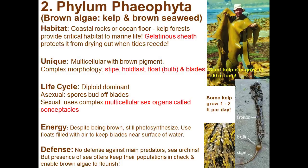Looking at pictures of brown algae, we can see the stipe, bulb, and fronds or blades. A bunch of floats allow the kelp to stay erect and reach toward the sun. Some kelp grows one to two feet per day under the right conditions. They can grow a hundred meters long, though blades are typically no longer than a few meters — a giant blade can cover a person's whole body.